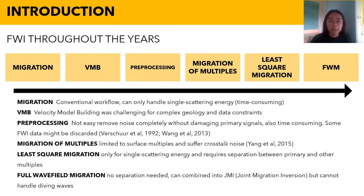Least square migration, or LSM for short, has the same issue as conventional migration — it can only handle single scattering energy, and it requires separation between the primary and other multiples. For full wavefield migration, or FWM, no separation between multiples is needed, and this method can be combined into JMI, or joint migration inversion. However, it cannot handle the diving waves problem, unlike FWI.